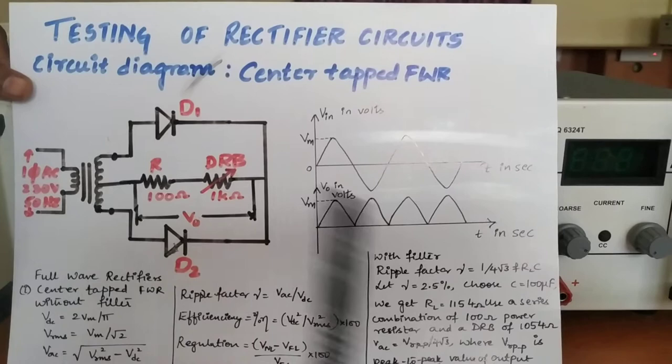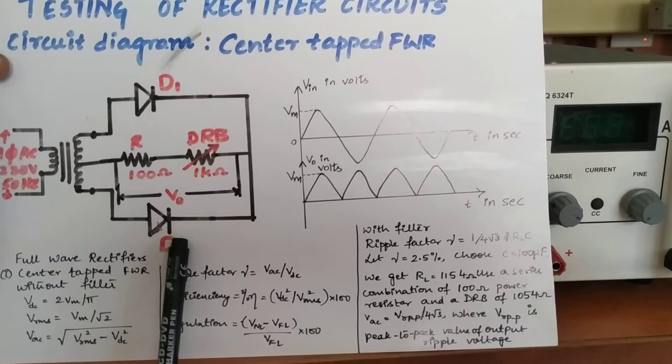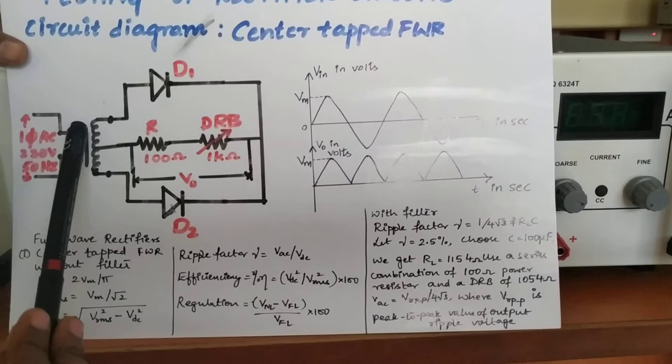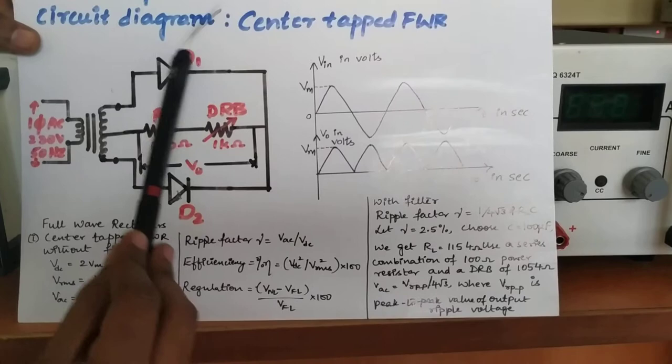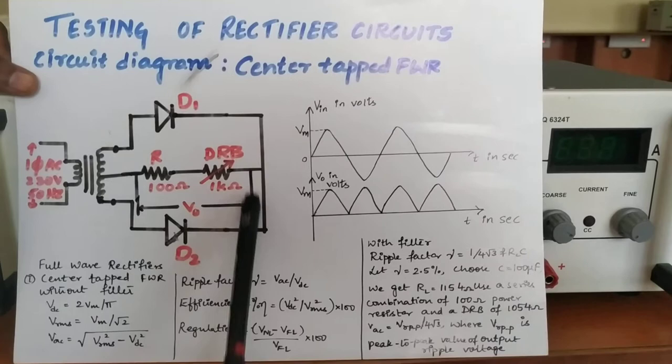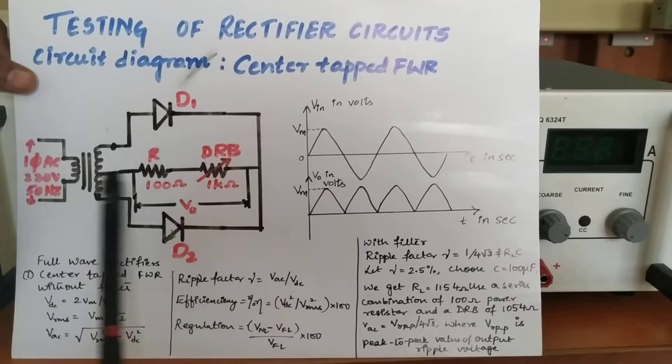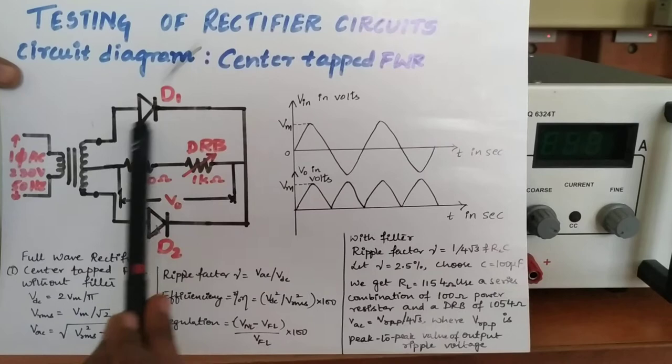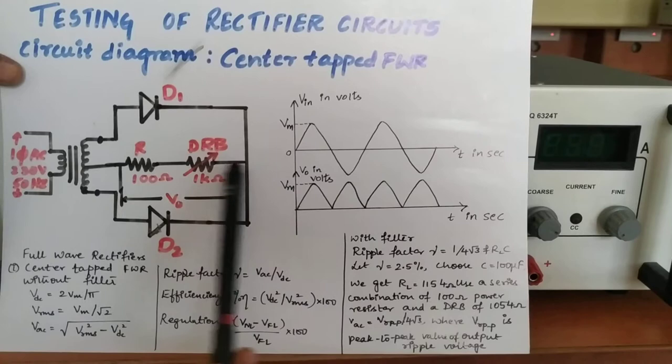We will be using a two diode circuit. You can see the two diodes used here. From the high potential terminal of the transformer, we connect to the anode of one diode, and the other high potential terminal connects to the anode of the other diode. The cathodes are shorted together. The load resistors are connected at the zero potential end so that we can observe the waveform at that terminal.